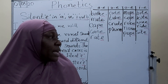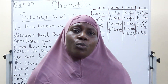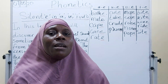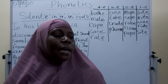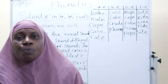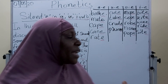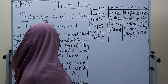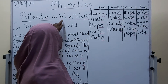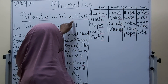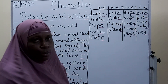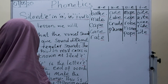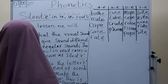So, like in our previous classes, I told you that when something is silent, it doesn't make any sound. It does not make any sound even if it is there. So, we are going to look at this E that is silent at the end of words. If you are with me, let's go to the body of the explanation.